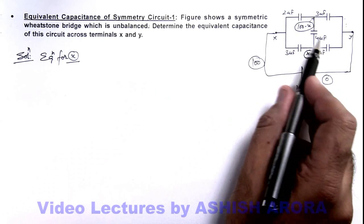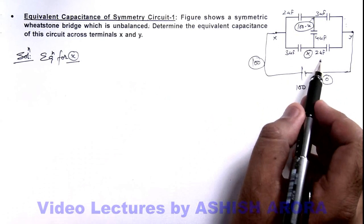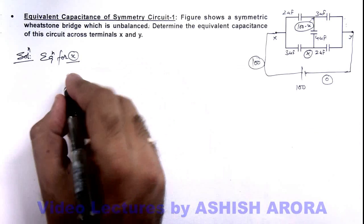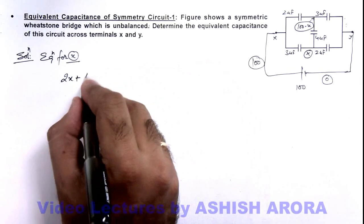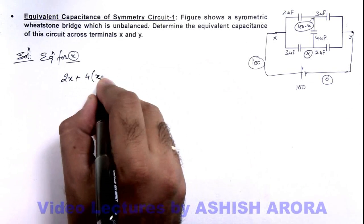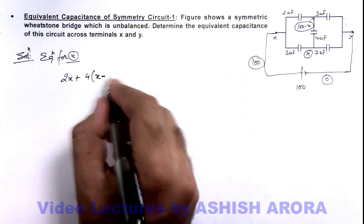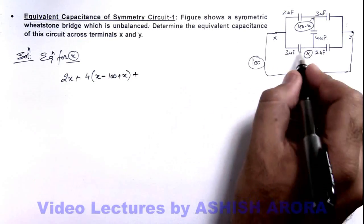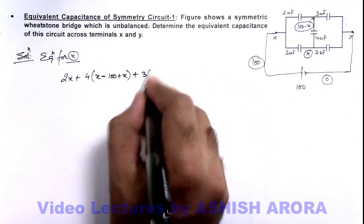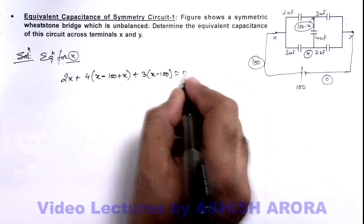So charges of these 3 must be equal to zero. In equation here we can write this is 2x plus for this 4 microfarad, that is 4 multiplied by x minus hundred minus x, this will become plus x, plus the charge on this plate, that is 3 multiplied by x minus hundred, that should be equal to zero.